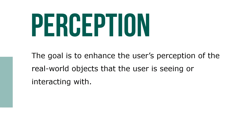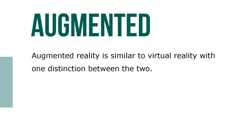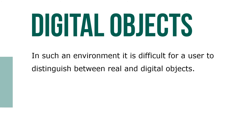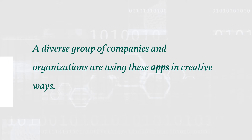The goal is to enhance the user's perception of the real-world objects that the user is seeing or interacting with. Augmented reality is similar to virtual reality with one distinction between the two. There is yet another type of virtual reality that falls between AR and VR called mixed reality (MR), or hybrid reality. In such an environment, it's difficult for a user to distinguish between real and digital objects. A diverse group of companies and organizations are using these apps in creative ways.